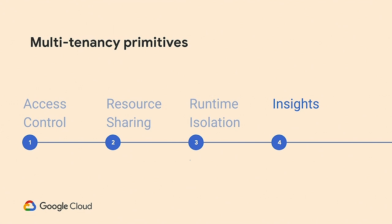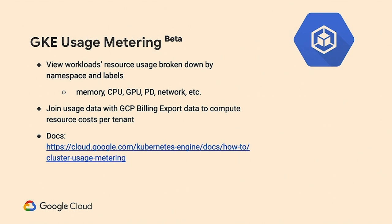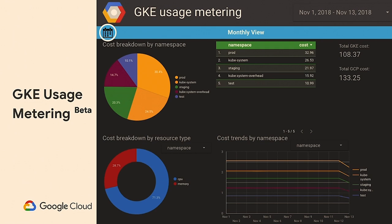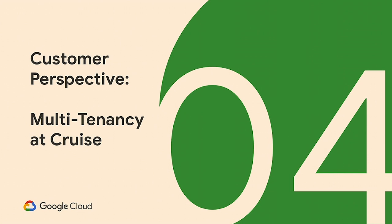Finally, to know what your tenants are up to, GKE has a new feature called usage metering. It captures the resource usage — memory, CPU, and other resources — that users consume in their assigned namespaces, putting that data into a BigQuery dataset you can analyze and visualize. It doesn't automatically generate billing data for tenants, but you can combine it with GCP billing data to figure out how to bill your tenants, and visualize it using something like Data Studio. I'd like to invite Carl to walk us through the Cruise Automation use case.